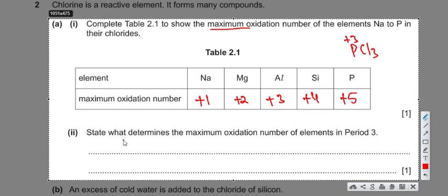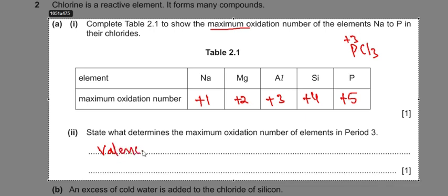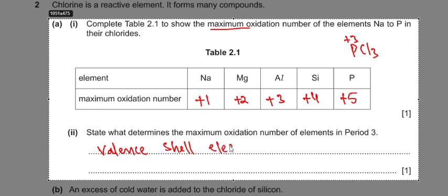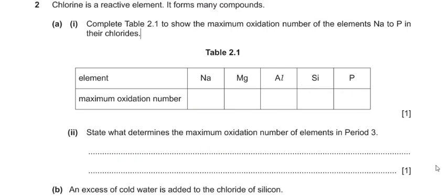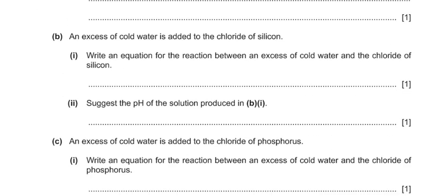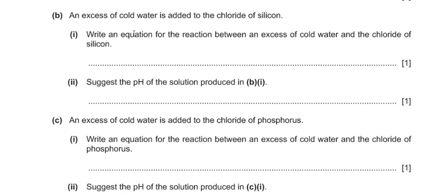The question then asks what determines the maximum oxidation number. As discussed, it is the valence shell electrons — these determine the oxidation state of all period three elements in their chlorides.